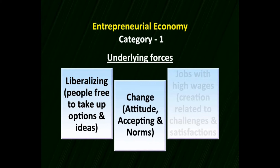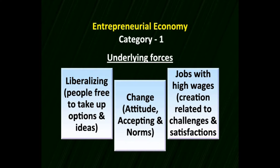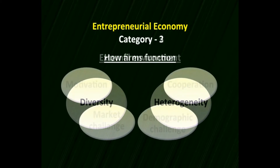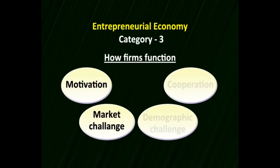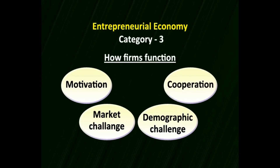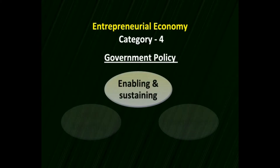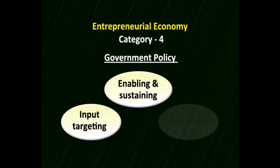Jobs with high wages and good recreation, challenge, and satisfaction are important. The external environment in terms of diversity and heterogeneity is important. Firms have to function with motivation and market challenge. Demographic changes in the market are important. Cooperation from the government and policy organizers is important — the government's policy has to be enabling and sustaining to support people in their businesses. Input targeting is important to design resources in the right combination for entrepreneurial success.